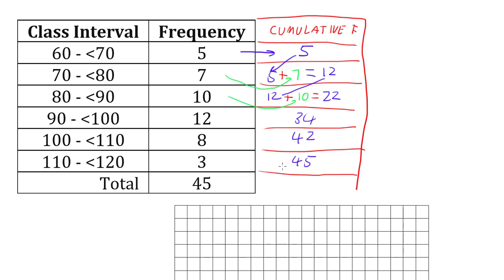And we know we haven't made a mistake because we ended up at the total of 45. Because we're adding up the frequencies as we go down, we should end up with the same number.